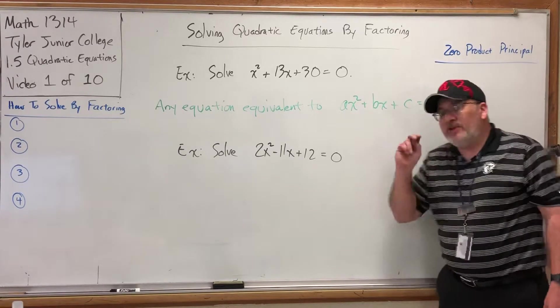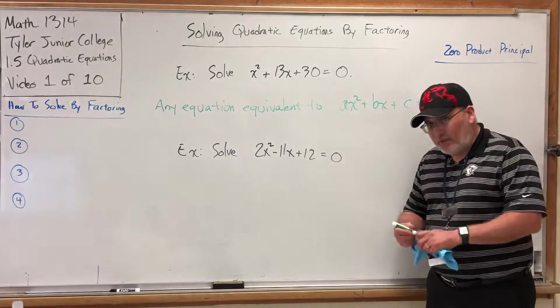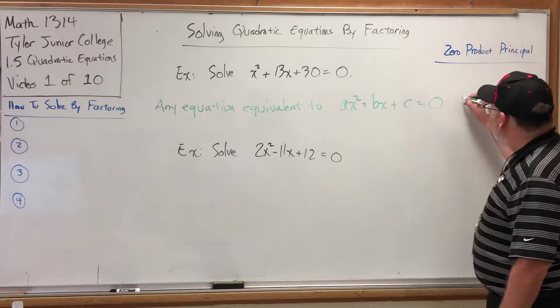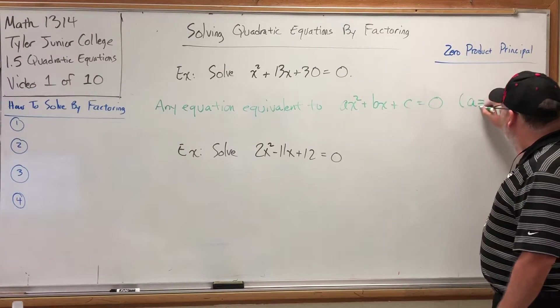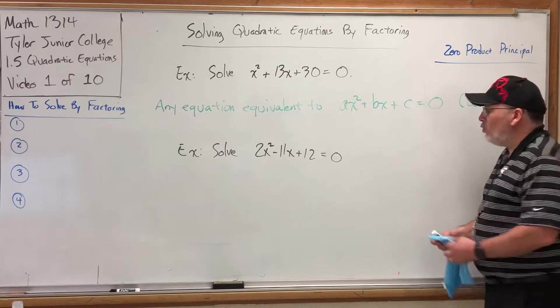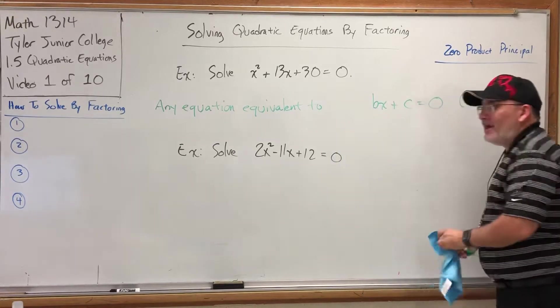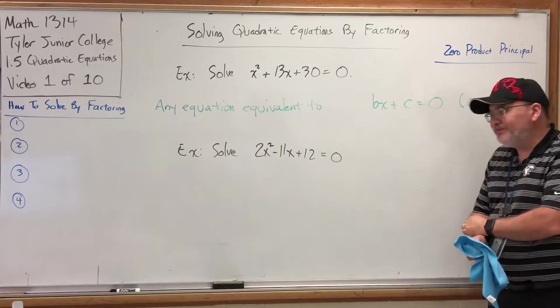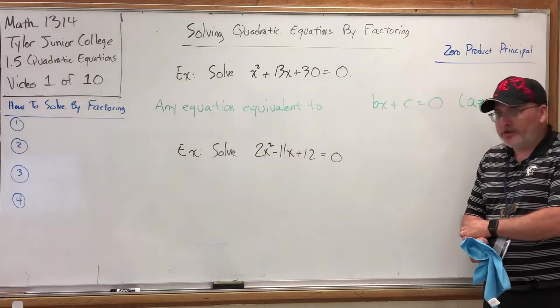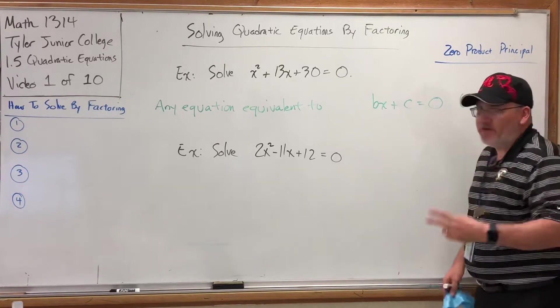Some number times x squared plus some number times x plus some number equals 0. And when I say plus, you have to take that loosely, because the a, the b, and the c can be positive or negative numbers. And speaking of the a, the b, and the c, specifically the a cannot equal 0. Well, it could, but if it were, then this first term would disappear, and it would no longer be categorized as a quadratic equation. I guess you could say that a quadratic equation is a polynomial equation of degree 2. In other words, the highest power of the variable is 2.